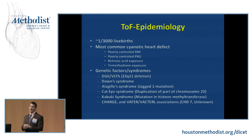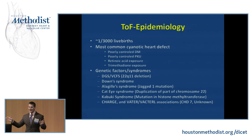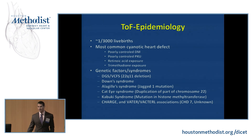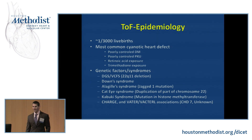You can actually get both Tetralogy of Fallot and an AV canal defect — it's not an uncommon association. Other genetic associations include Alagille syndrome, cat eye syndrome, and Kabuki syndrome.